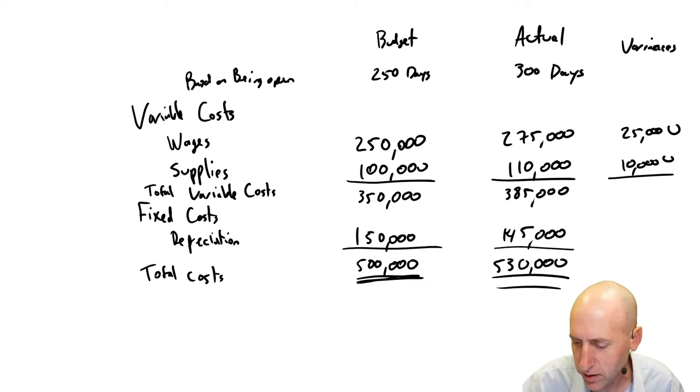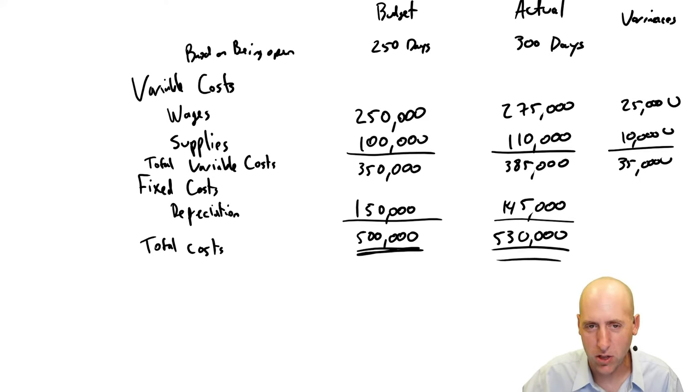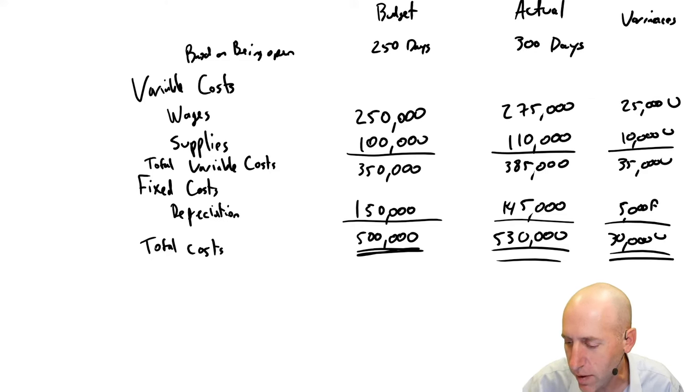The only place, this is $35,000 unfavorable. The only place you made your budget was the place you didn't have a lot of control over, depreciation. You were $5,000 favorable, but overall you are $30,000 to the bad. You did a bad job here, friend.